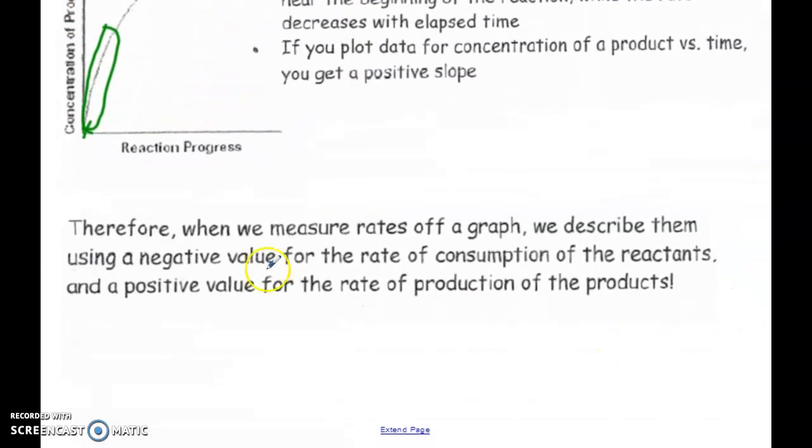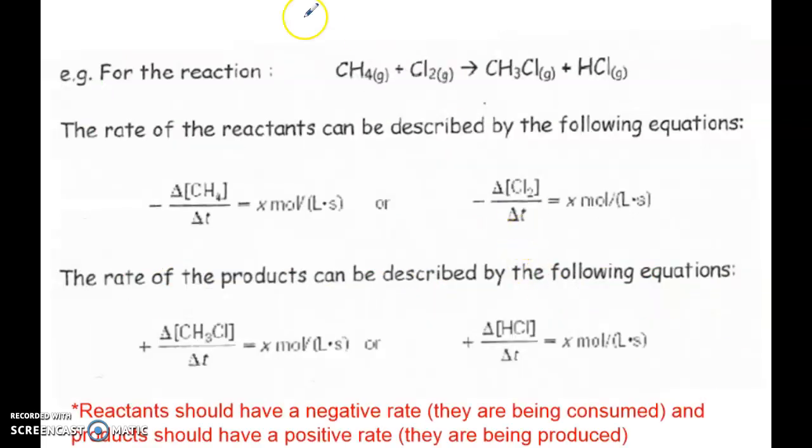So we've already talked about this. When we measure rates off a graph, we describe them using a negative value for the reactants, a positive value for the products.